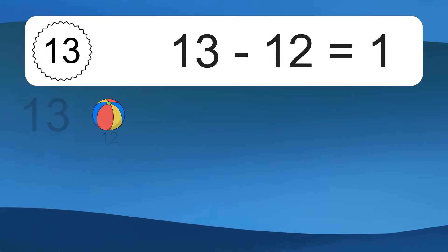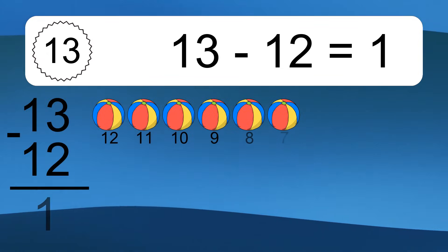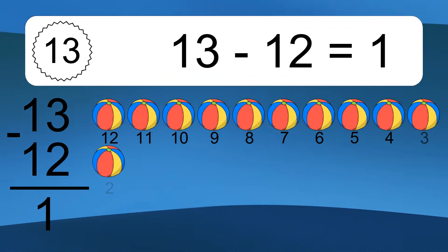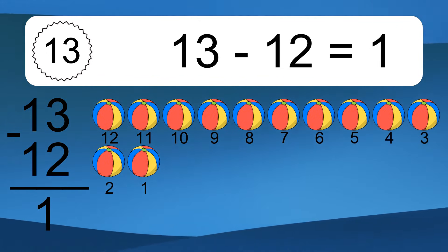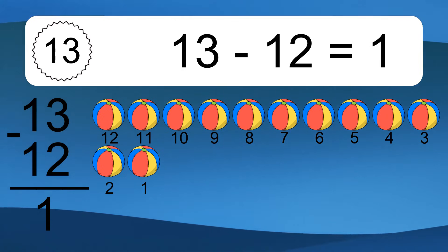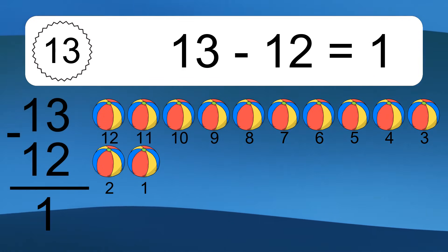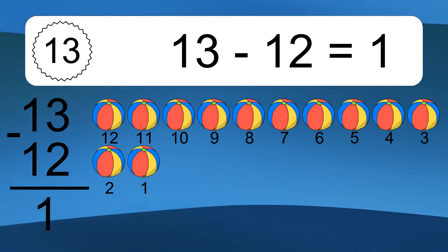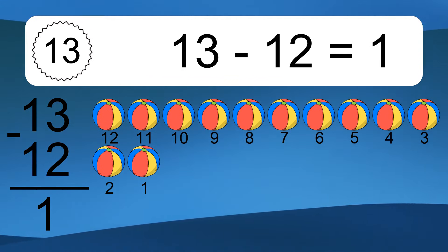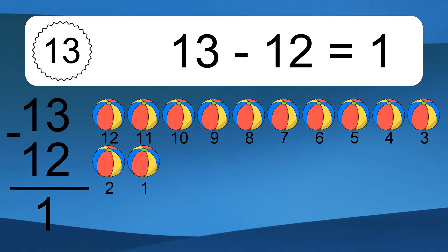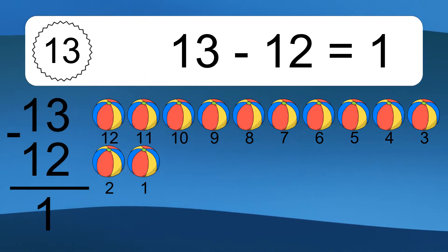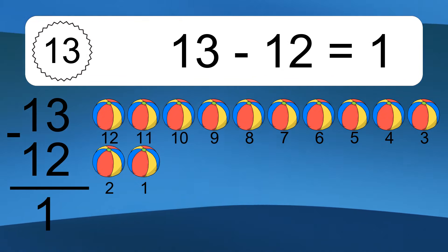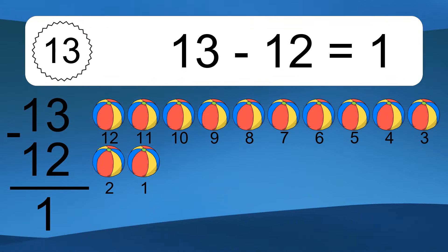13 minus 12 equals 1. Let's count it: 12, 11, 10, 9, 8, 7, 6, 5, 4, 3, 2, 1.